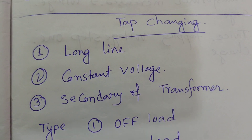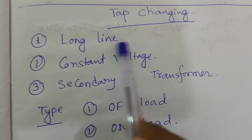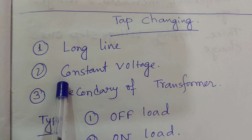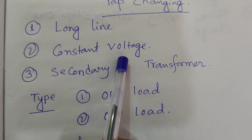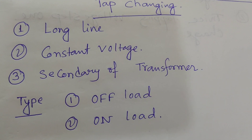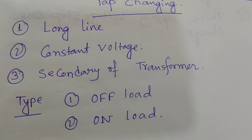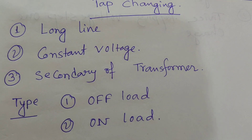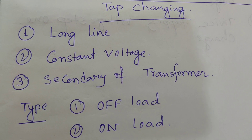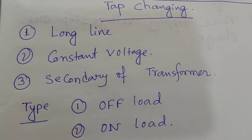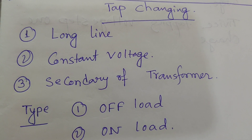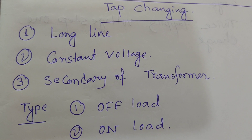So we use the tap changing method, which is applicable for long distance transmission lines and distribution lines. We get a constant voltage at the consumer terminal and the secondary of the transformer. The tap is situated at the secondary of the transformer — this should be remembered. If the load increases, the primary voltage drops and accordingly we must maintain a constant secondary voltage.